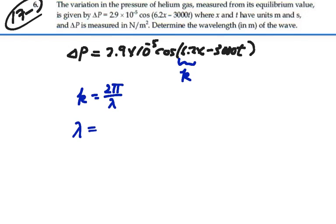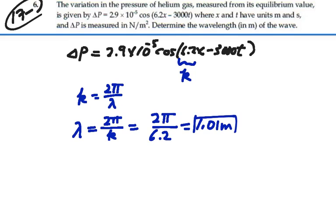So it's true that the wavelength would be 2π over the angular wave number, and that's going to be 2π over 6.2, and that is equal to 1.01 meters. So that is the wavelength of this wave function, of this wave.